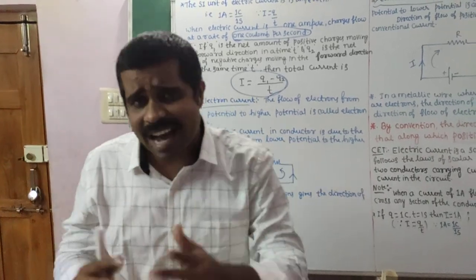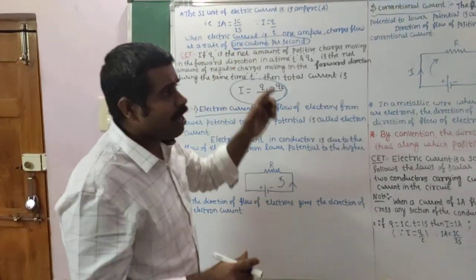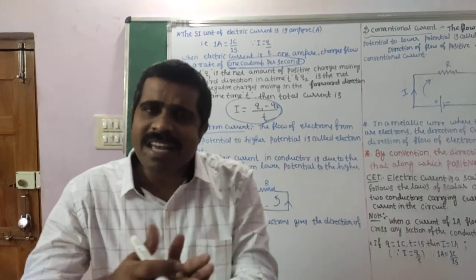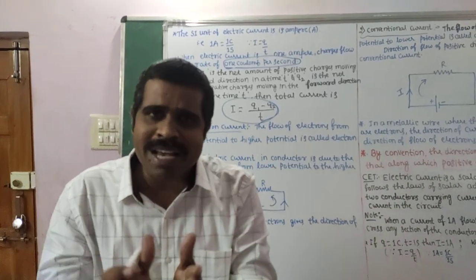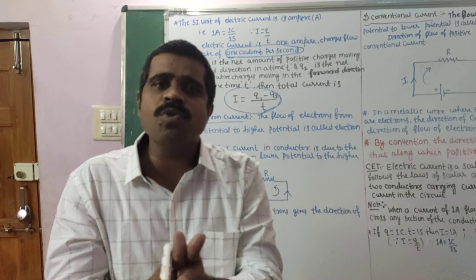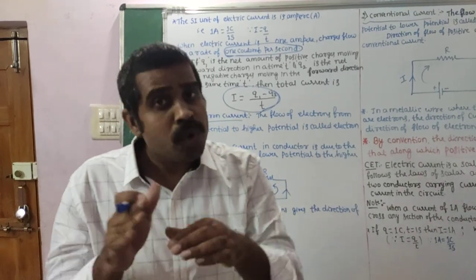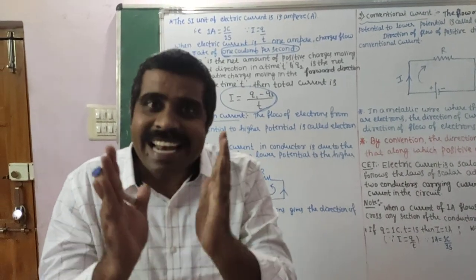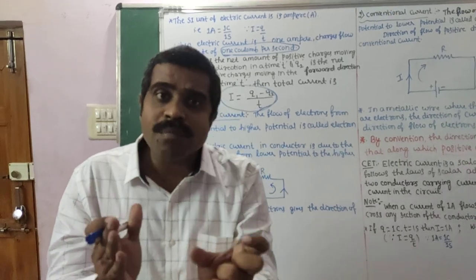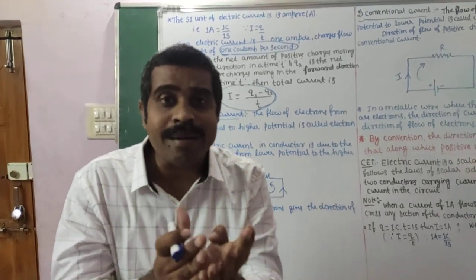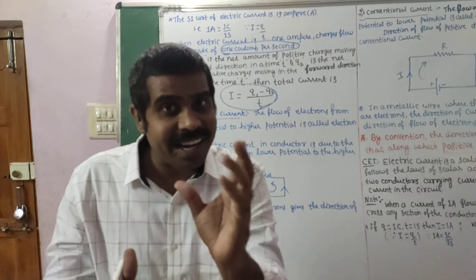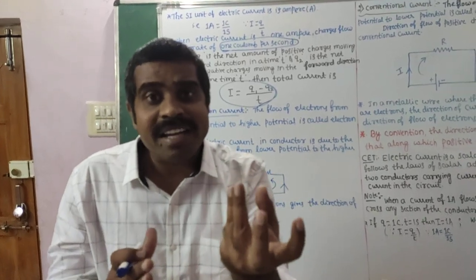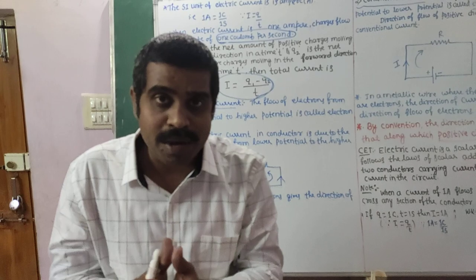1 ampere is actually a very large current. In our daily life, many household appliances make use of current in the order of 1 ampere. When you go to electronic devices like mobile phones and LEDs, they consume current in terms of milliamps or microamps. When you see lightning — a natural phenomenon — the current is in terms of thousands of amperes.